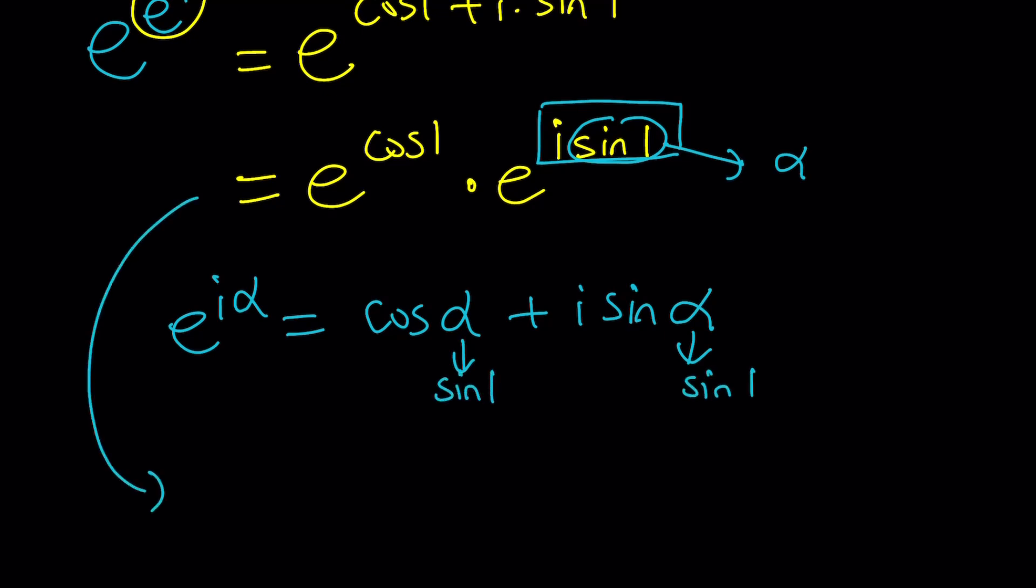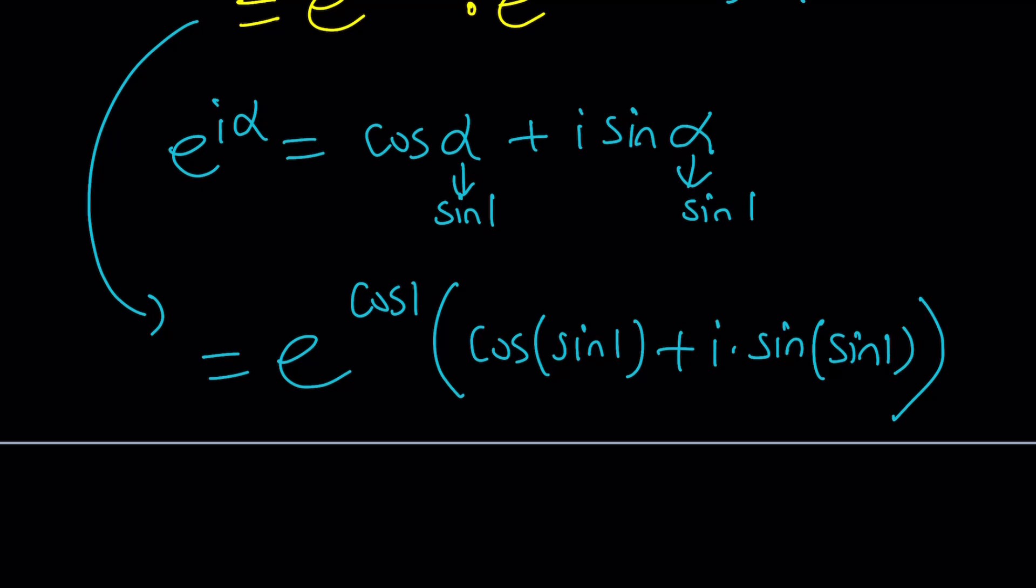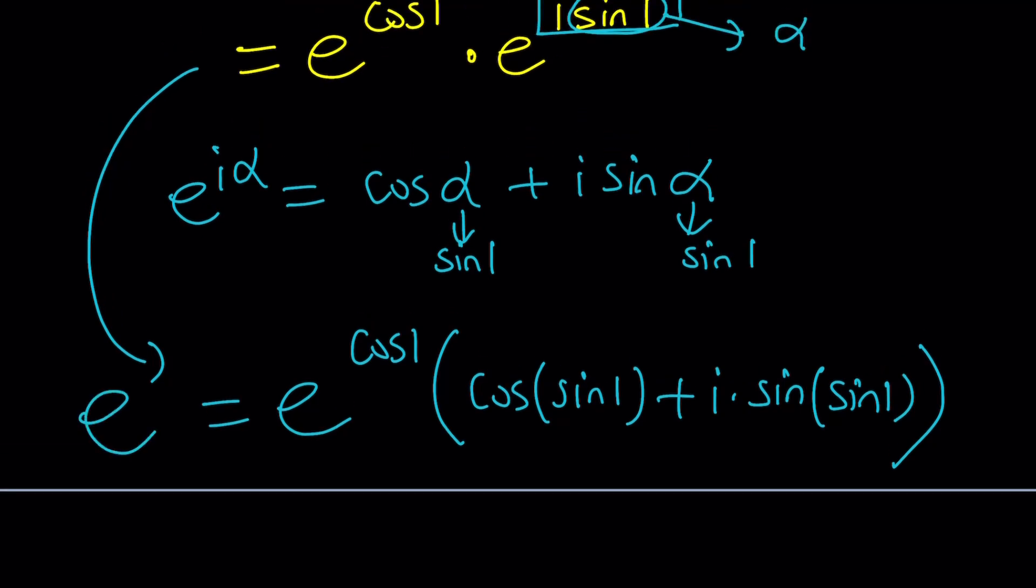So now, this expression becomes e to the cosine 1 times the expression cosine of sine 1, which is our alpha, plus i times sine of sine 1, again, which is our alpha. All right? So this is our number e to the e to the i.